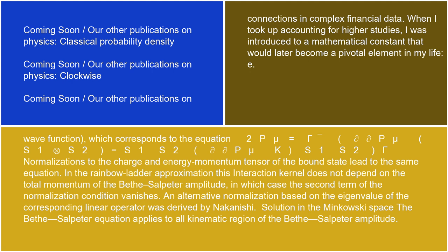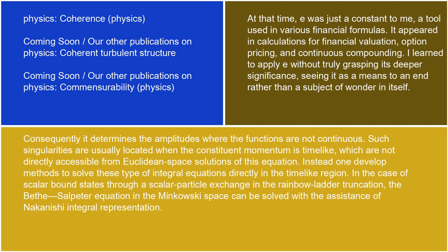Solution in Minkowski space: the Bethe-Salpeter equation applies to all kinematic regions of the Bethe-Salpeter amplitude. Consequently, it determines the amplitudes where the functions are not continuous. Such singularities are usually located when the constituent momentum is timelike, which are not directly accessible from Euclidean space solutions of this equation. Instead, one has developed methods to solve these types of integral equations directly in the timelike region. In the case of scalar bound states through scalar particle exchange in the rainbow-ladder truncation, the Bethe-Salpeter equation in Minkowski space can be solved with the assistance of the Nakanishi integral representation.